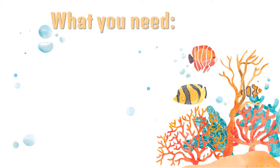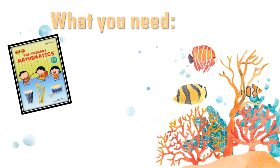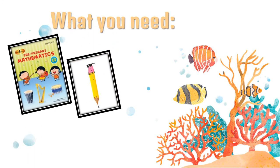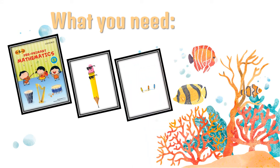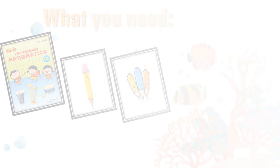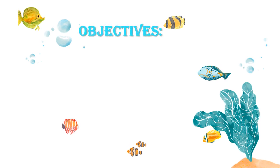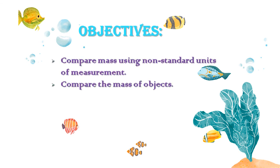For today's lesson, look at my screen. You will need your mass workbook C3, one pencil, an eraser, and some colors. Make sure you have all these things near you so you can do your work easily. The objectives for today are: compare mass using non-standard units of measurement, and compare the mass of objects. We are doing unit number five, which is about musical instruments and heavy and light objects.